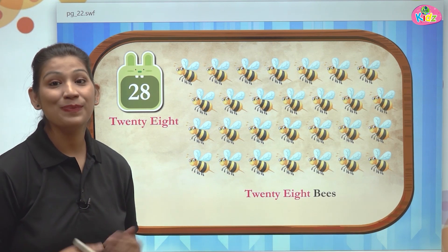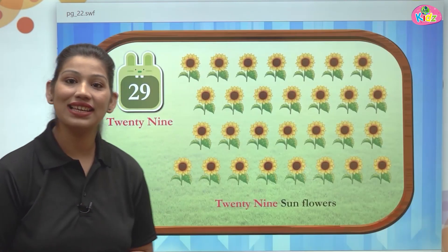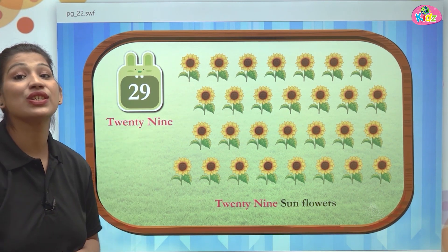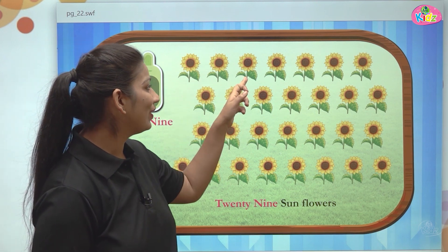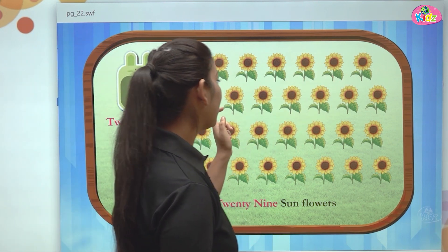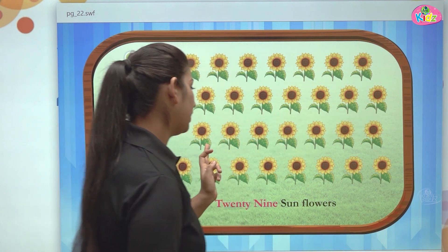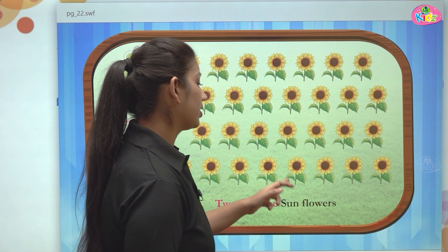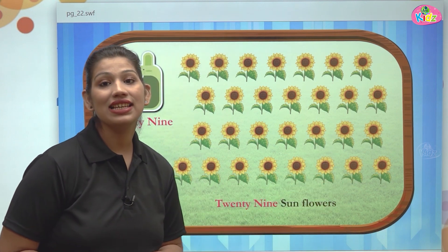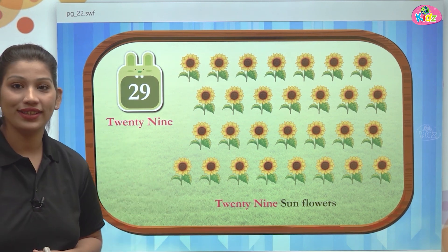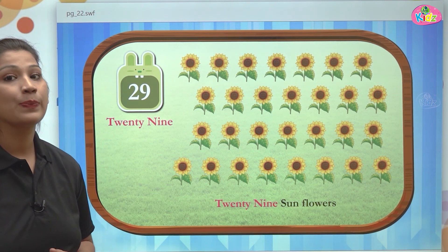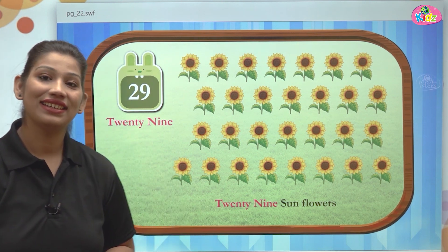After 28 there comes number 29. Yes, 2 and 9 is 29. And here we can see sunflowers. This is number 29, a two-digit number. Let us count the number of sunflowers — 1, 2, 3... all the way up to 28 and 29. These are 29 sunflowers. First we will write 20 and then 9. T-W-E-N-T-Y is 20, N-I-N-E is 9. 29.